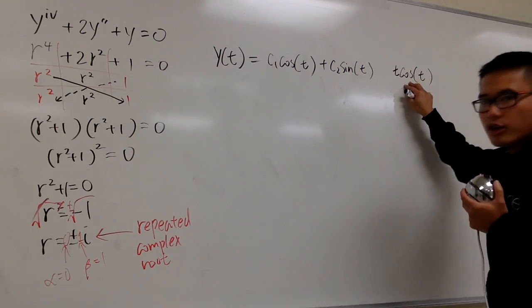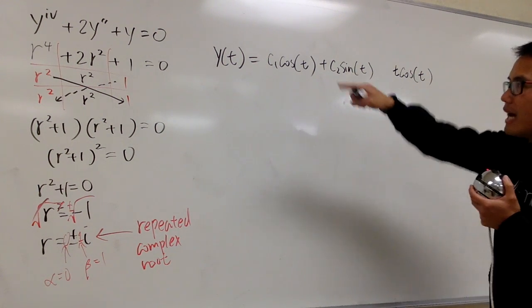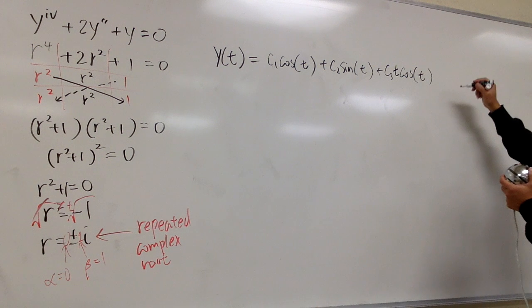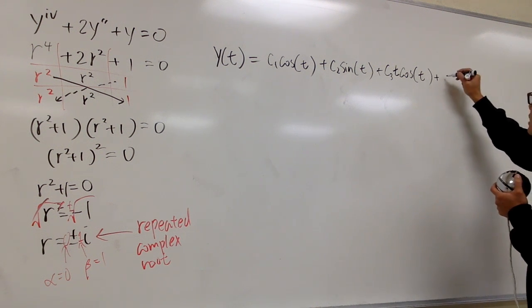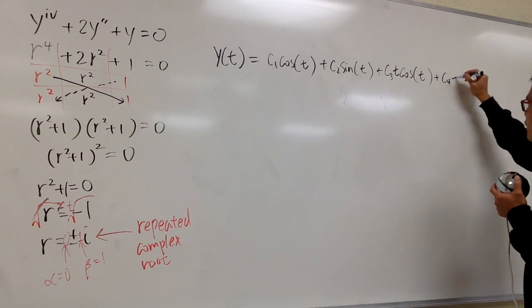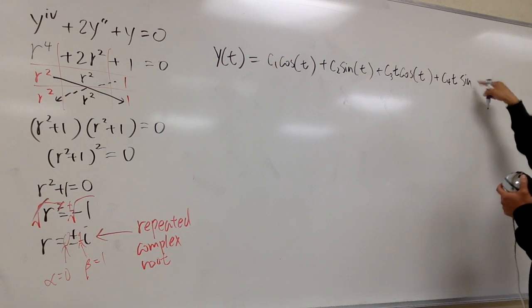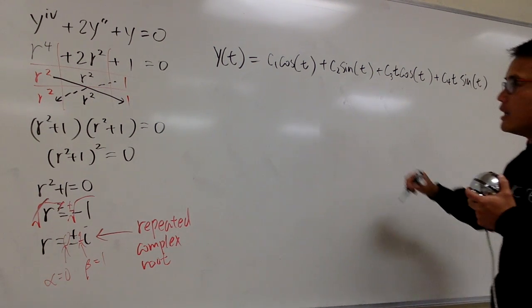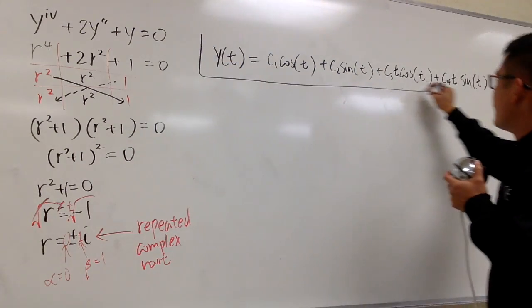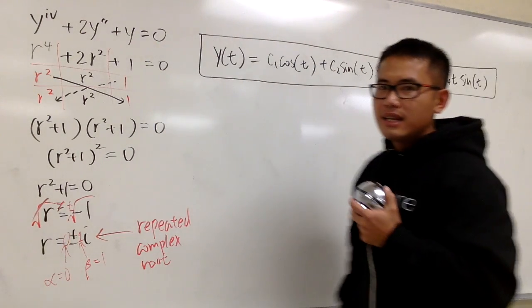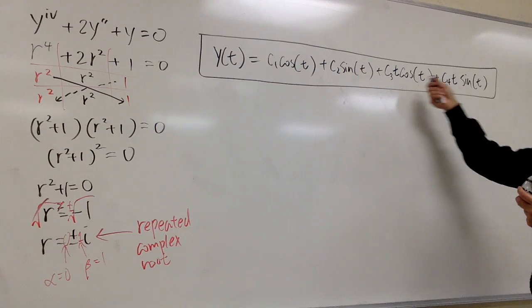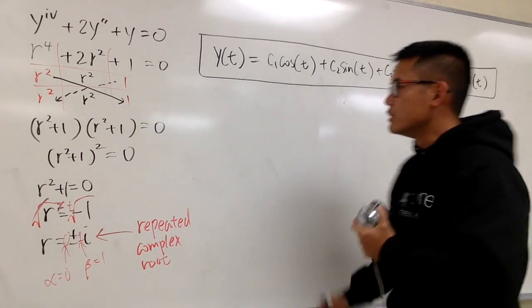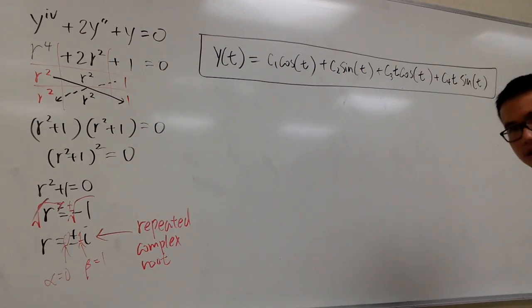So this is going to be the third building block for the general solution for that. And now, I will just multiply this with c3 and add them up. And you know the deal. At the end, I will just put on plus c4, and then we need to have a t right here, and then sine of beta t, which is 1t, so just t like this. This is definitely not bad at all. You just have to make sure you have to multiply the t as many times as you need to, and be sure you have all this like that. Anyways, that's it.